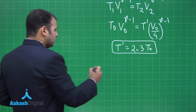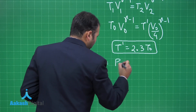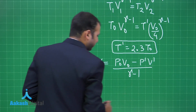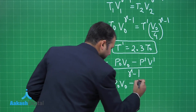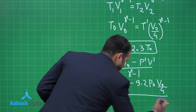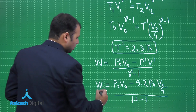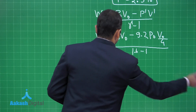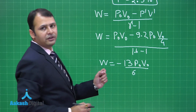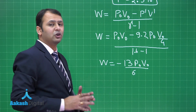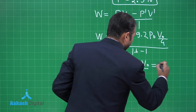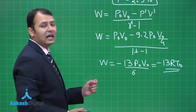For the work done in an adiabatic process: W = (P₀V₀ − P′V′) / (γ − 1). Substituting: W = (P₀V₀ − 9.2P₀ × V₀/4) / (1.6 − 1). Solving this gives work done = −13P₀V₀/6. Since initially there are 6 moles total, P₀V₀ = 6RT₀, so W = −13RT₀. The magnitude of work done is 13RT₀.